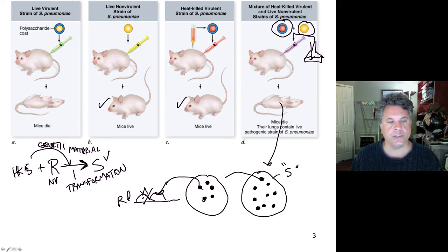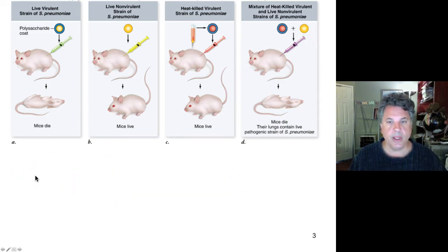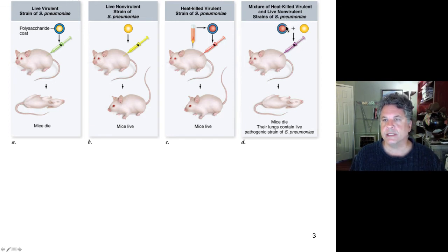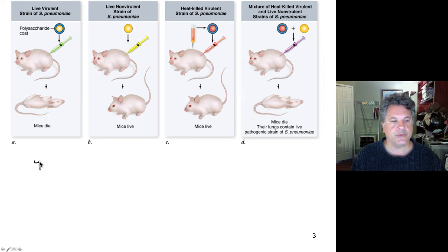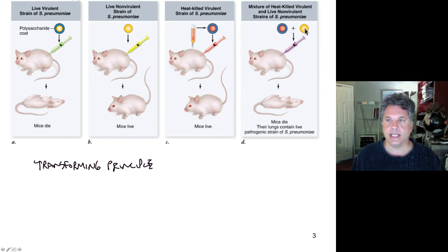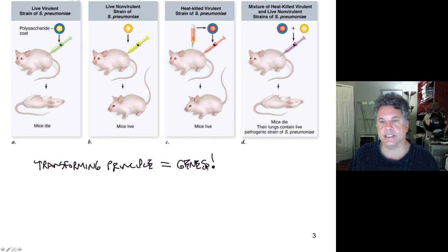It was immediately realized that the R cells had picked up something when incubated with the heat-killed S cells — something that had caused their transformation into S cells — and whatever it was must be the stuff of genes. It must be genetic material, because it had caused the heritable change of phenotypes from R to S and from non-virulent to virulent. Avery, McCarty, and MacLeod in the 1940s realized that if they could isolate from the heat-killed extracts whatever was transforming the R cells into S cells, they would have the molecule of genes — the genetic material. They called this the transforming principle, which had caused a permanent change in both the virulence phenotype and the growth phenotype on petri dishes.